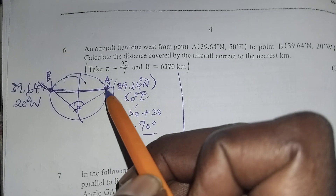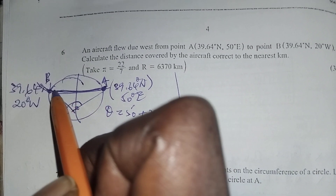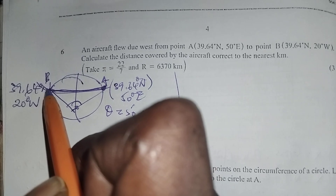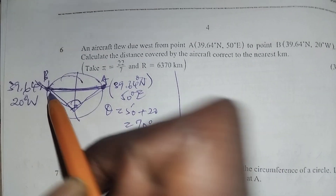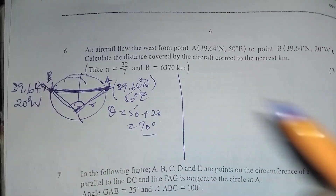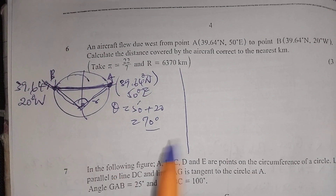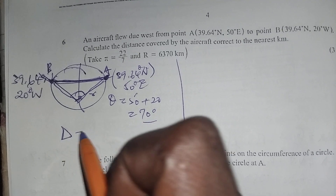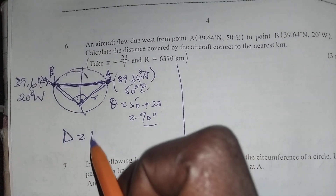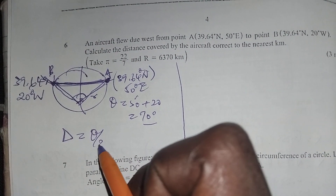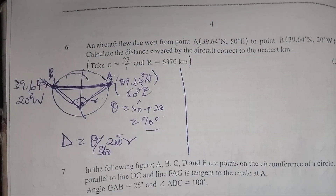It is staying on the same latitude. To calculate the distance, the formula is: distance equals theta over 360, times 2 pi r. We need to find the radius for that latitude circle.